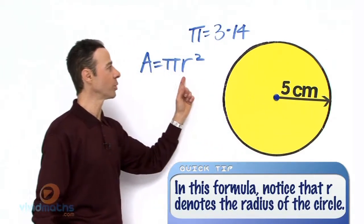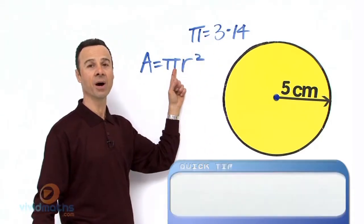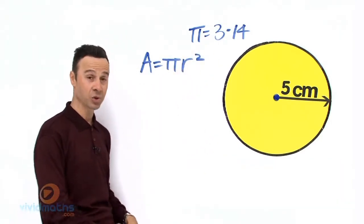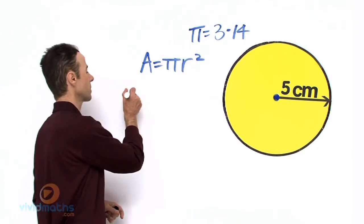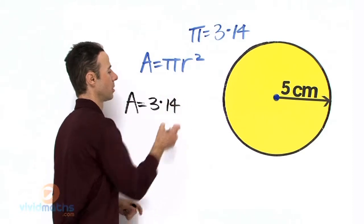So r is 5, so we are going to put it right there for r squared. And pi equals 3.14, put it in for pi, and we will have the total area. So let us do that now: 3.14 for pi times 5 squared, which is the radius.